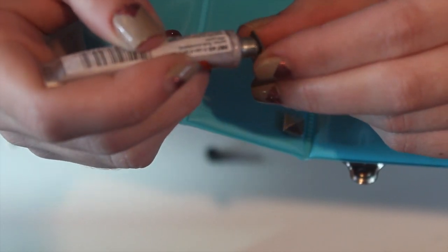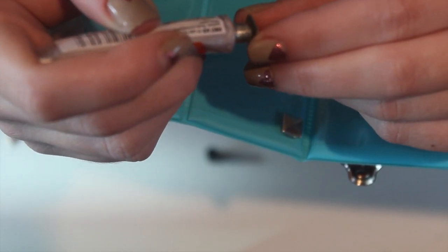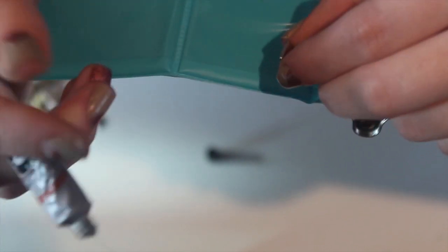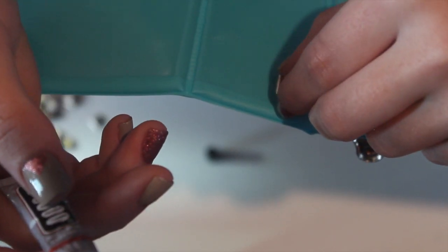So I first started by taking the jewelry glue and I started gluing the backs of the studs, and then I just placed them right next to each other.